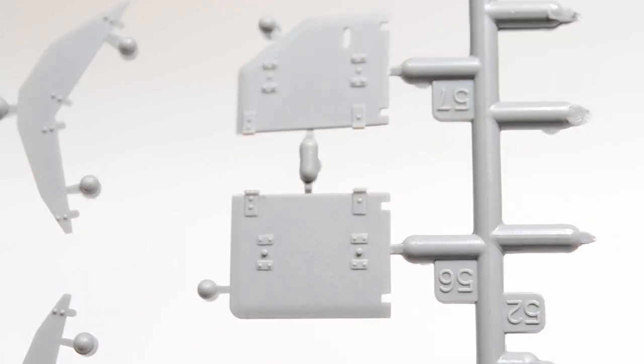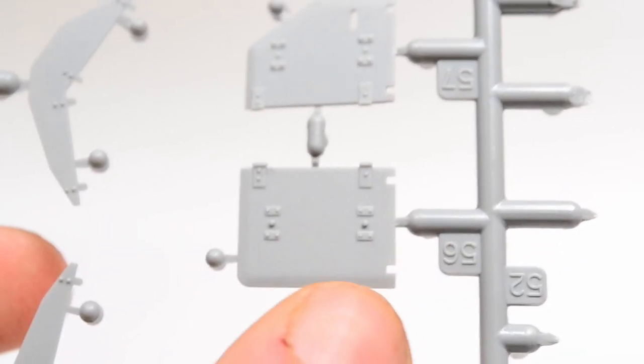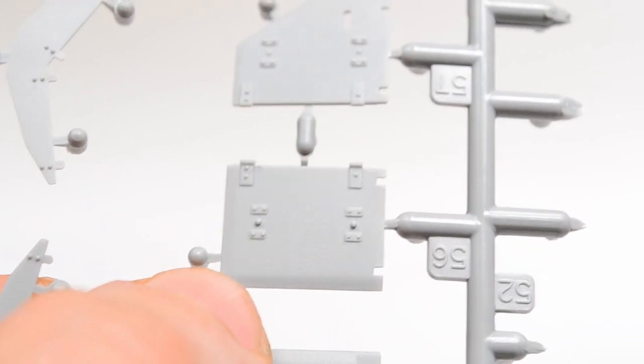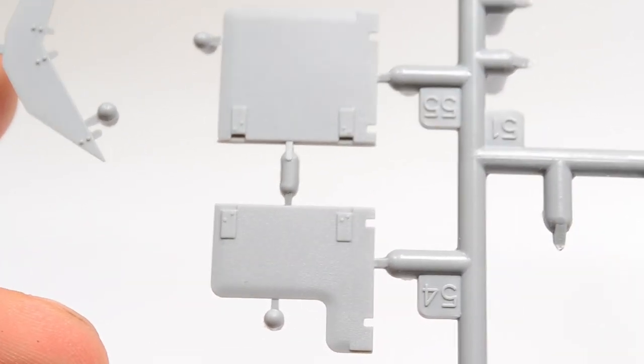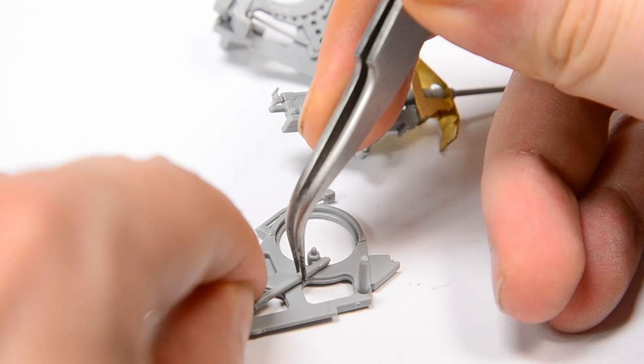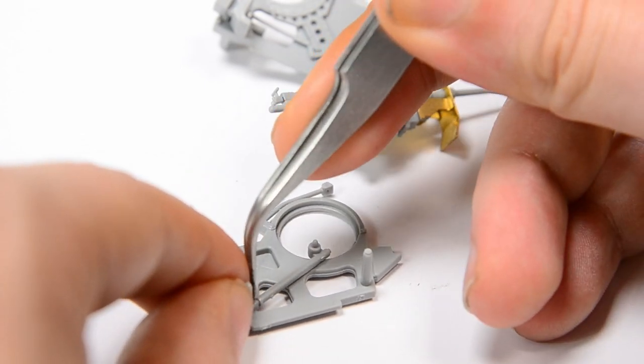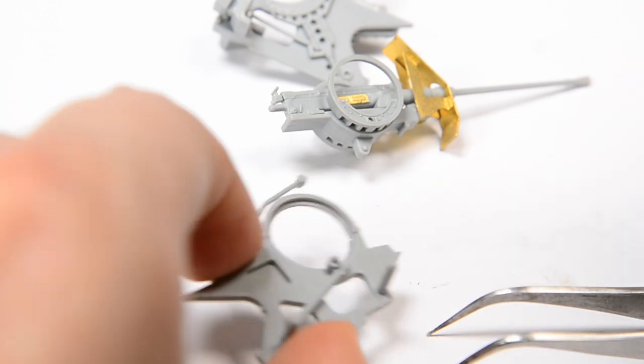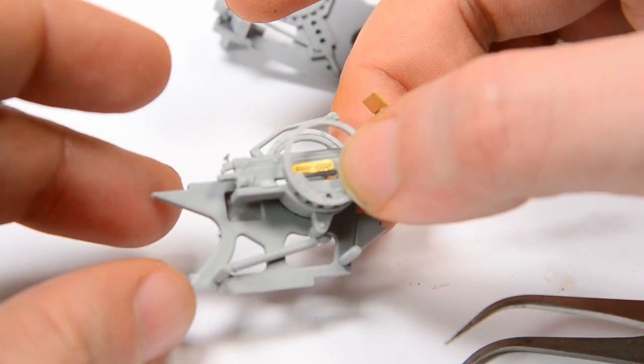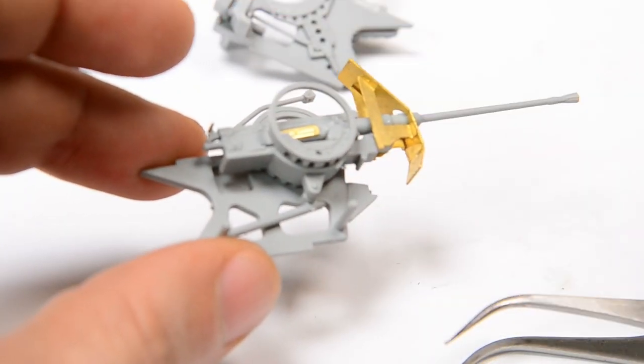And if you question yourself why the heck I went for the photo etch in the first place, Dragon made some compromises. To get the six millimeter thick armor plating for this gun shield, they tapered the edges, and this is something that looks completely funny, altering the shape of a metal plate just to get it thin enough. The photo etch was a nice addition here.